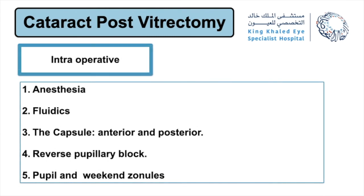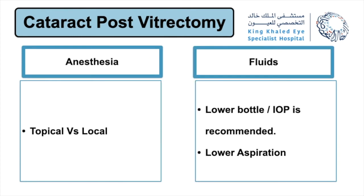Intraoperative difficulties can be seen in five situations: anesthesia, fluidics, the capsule anterior and posterior, reverse pupillary block, and the pupil and weakened zonules. The decision regarding anesthesia — whether local versus topical versus rarely general — depends on the length of the surgery, the cooperation of the patient, and the axial length. For fluidics, the recommendation is to go for a lower bottle height and IOP, and lower aspiration.